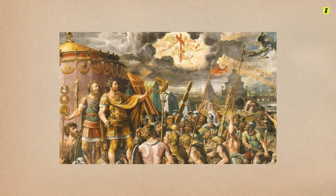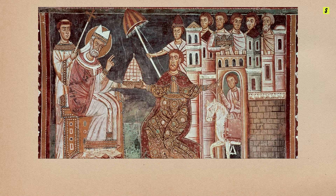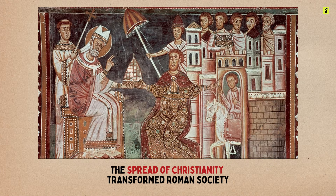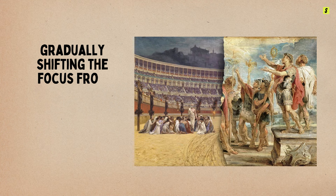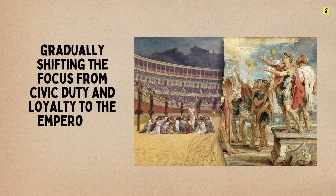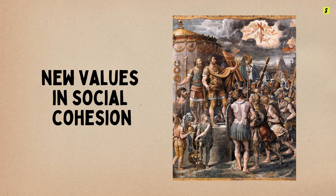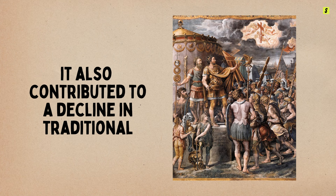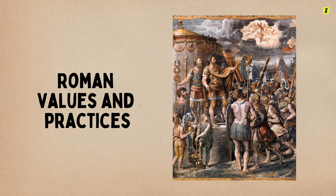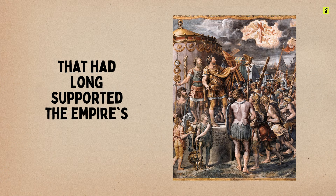Social and cultural changes also played a part in the empire's decline. The spread of Christianity transformed Roman society, gradually shifting the focus from civic duty and loyalty to the emperor to spiritual concerns. While Christianity brought new values and social cohesion, it also contributed to a decline in traditional Roman values and practices that had long supported the empire's stability.